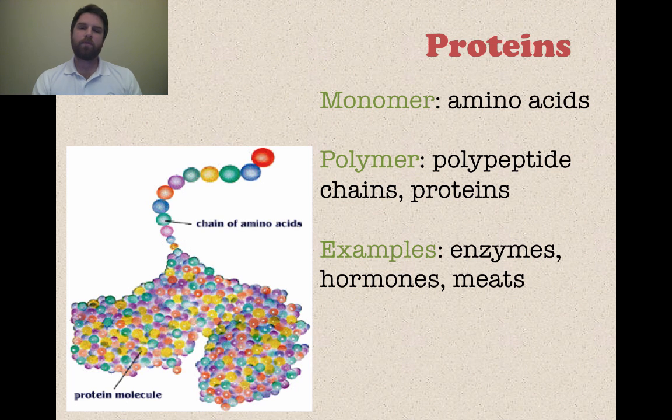Okay, so the monomer of a protein is called an amino acid. And the polymer is called a polypeptide chain. And several polypeptide chains together make up a protein. So the examples again, enzymes, hormones, and meat. You can see in that picture there how you have the little circles which represent amino acids. And then they form a chain. And then they get a little more complex. And they form this big old protein molecule there at the bottom.